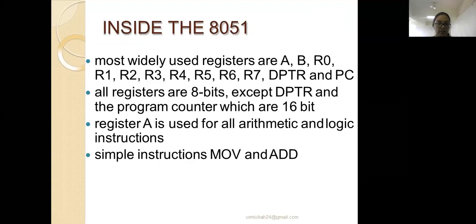Till now we understood that the most widely used general purpose registers are register A, register B, registers R0 to R7, DPTR which is the data pointer register, and PC which is the program counter register. All registers are 8-bit except the data pointer and program counter, which are 16-bit registers.